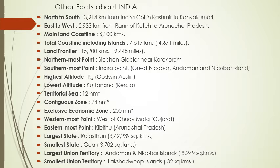The southernmost point of India is Indra Point, which is in Great Nicobar and the Nicobar Islands. The highest altitude in India is K2 Godwin Austin. The lowest altitude is found in Kerala, i.e. Kuttanad. The territorial sea length, in which India's ships can easily travel up to fishing areas, is 12 nautical miles.